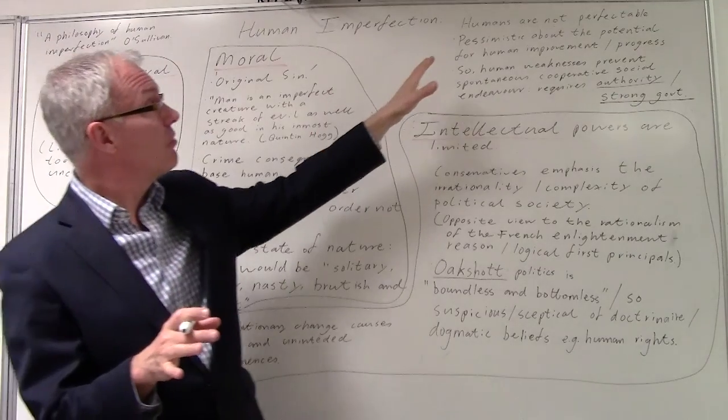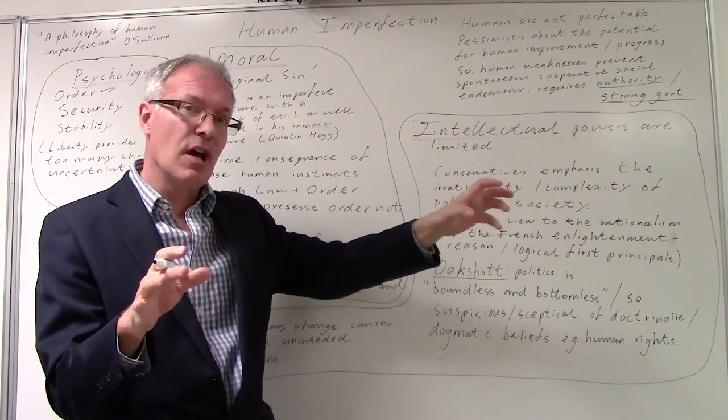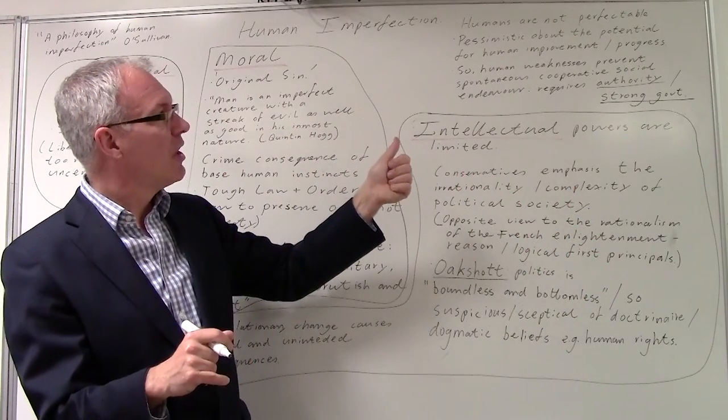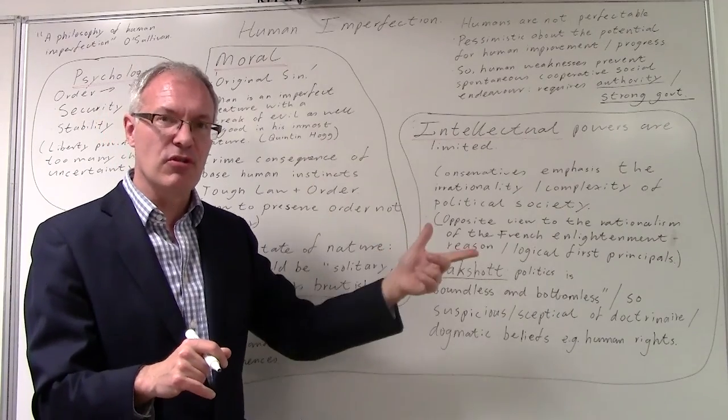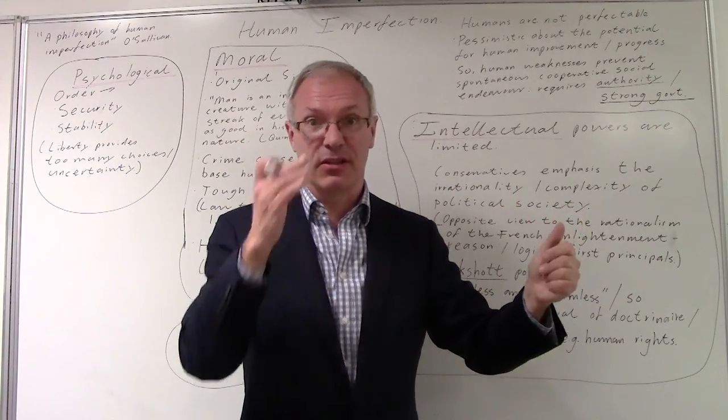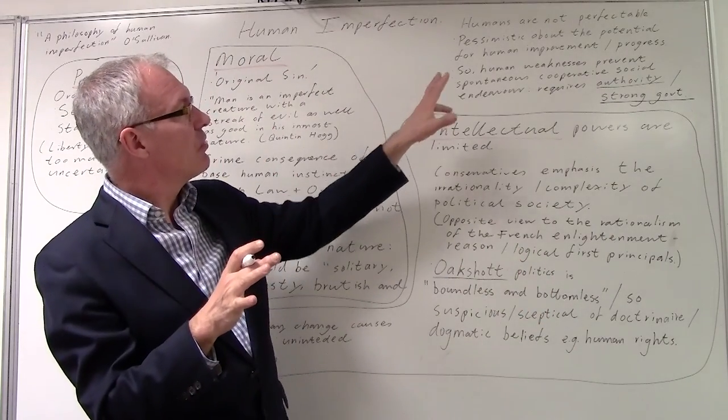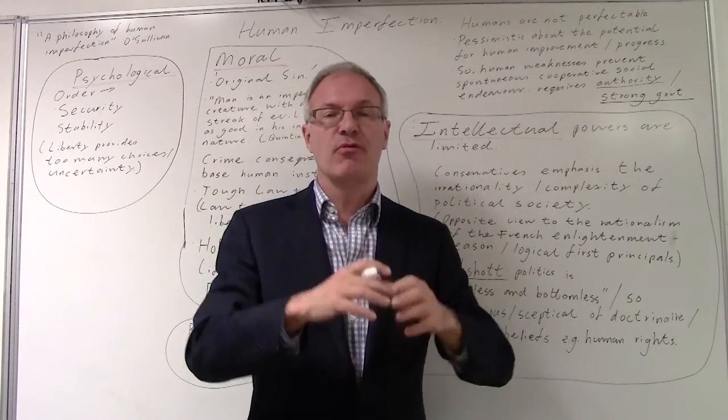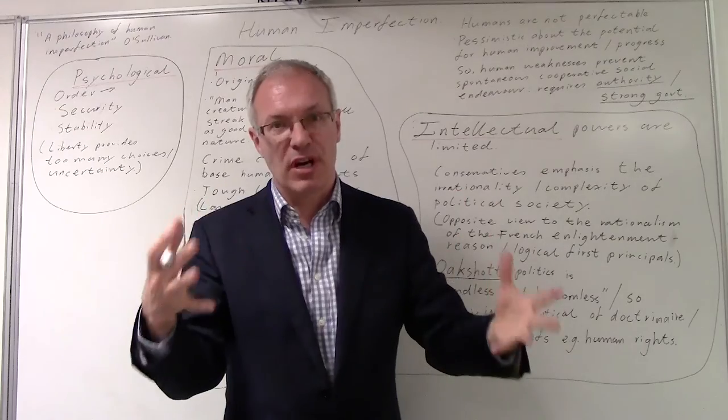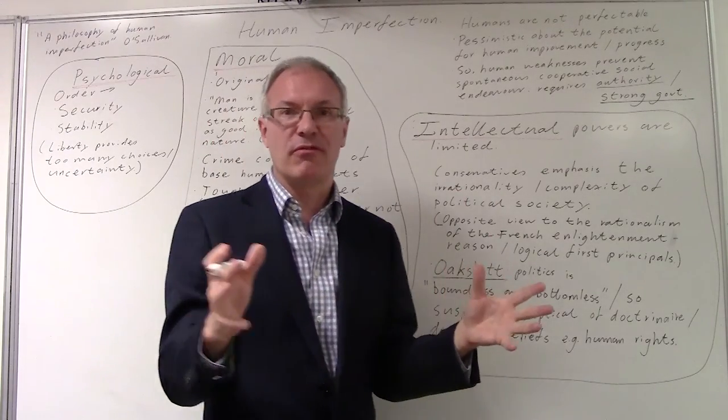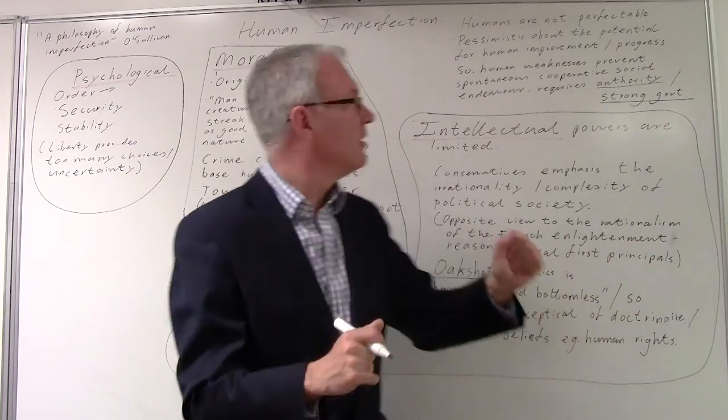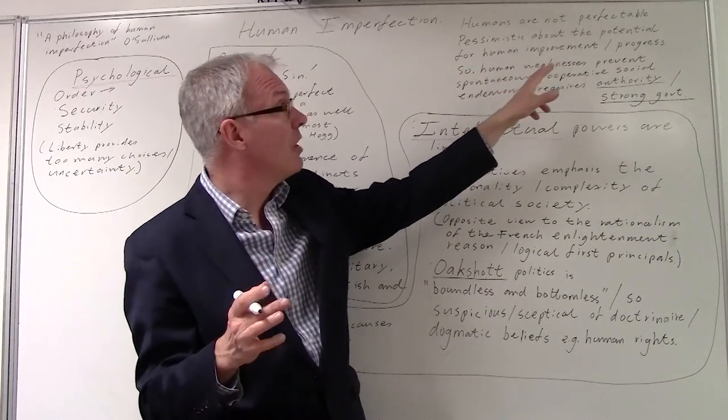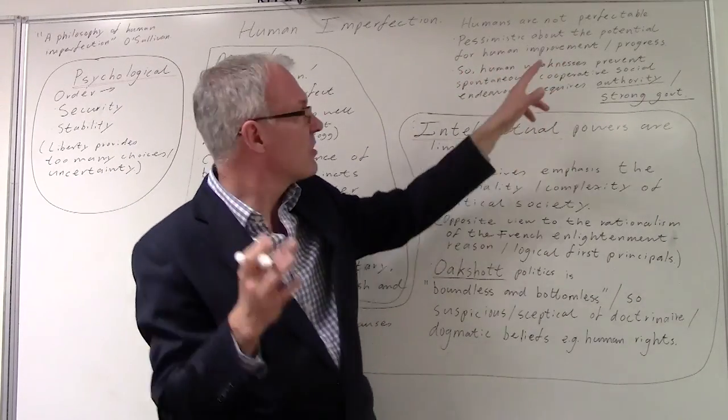Basically, conservatives view humans as not perfectible, unlike many other political ideologies. Liberals are optimistic about human nature, as are socialists and especially anarchists, because they all assume that human nature can be improved through better circumstances, through education, and that people will benefit from ideas such as human rights. But conservatives are pessimistic, perhaps realistic, about the potential for human improvement and progress. They think that this is limited.